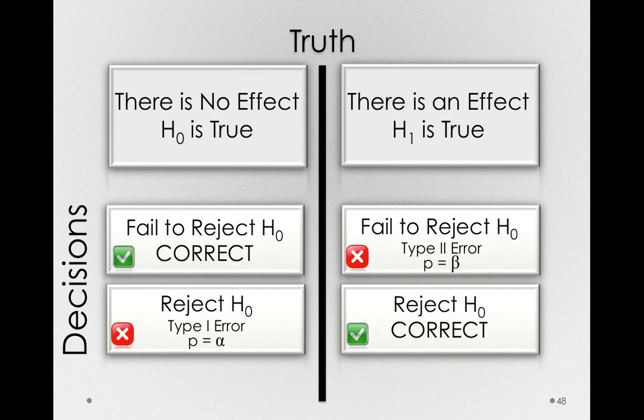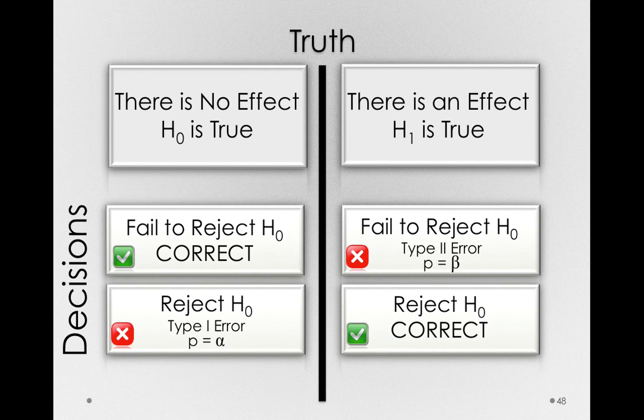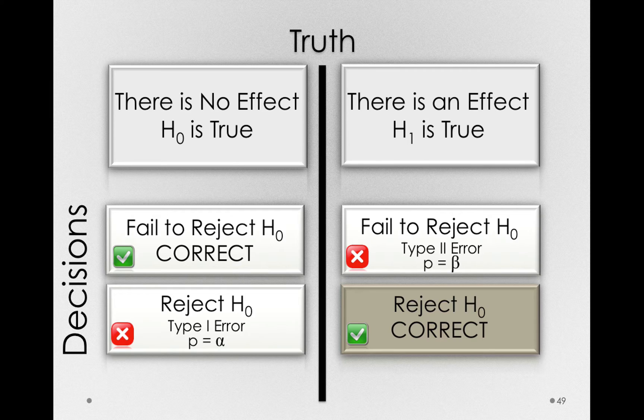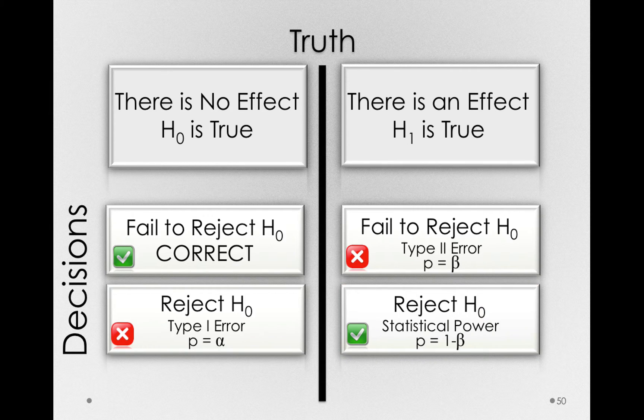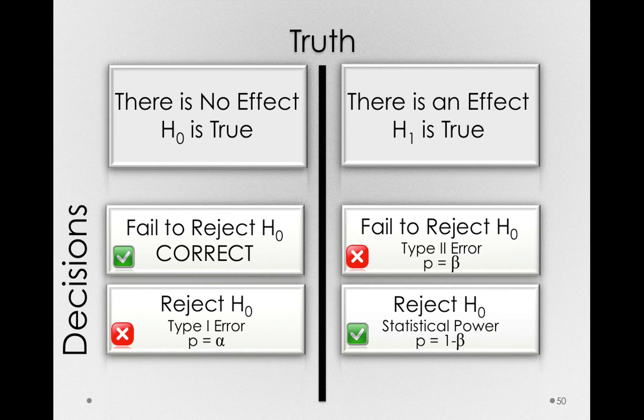First, starting in the state of the world where there really is some effect, we have a name for rejecting the null hypothesis when it's actually false. That is, statistical power. Now, power, or statistical power, occurs with probability of 1 minus beta. It's simply the complement.